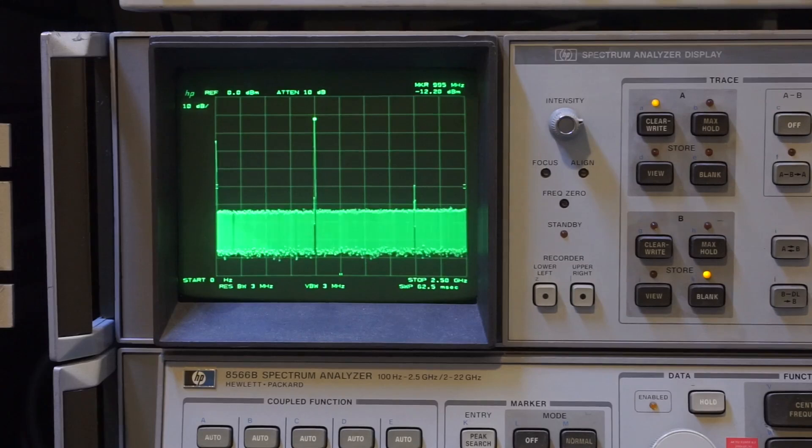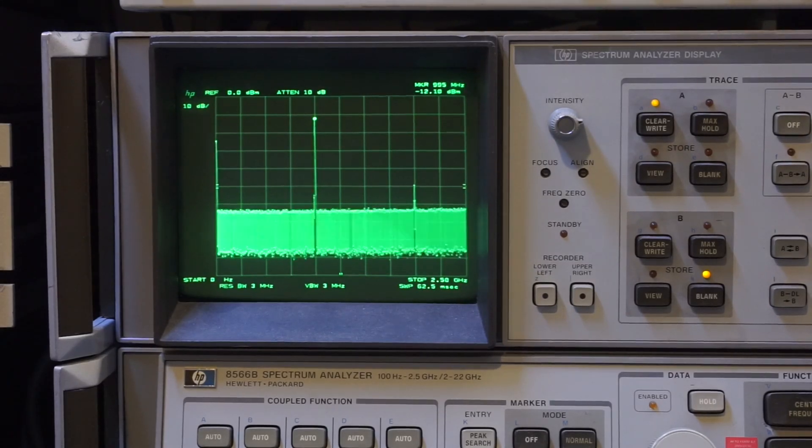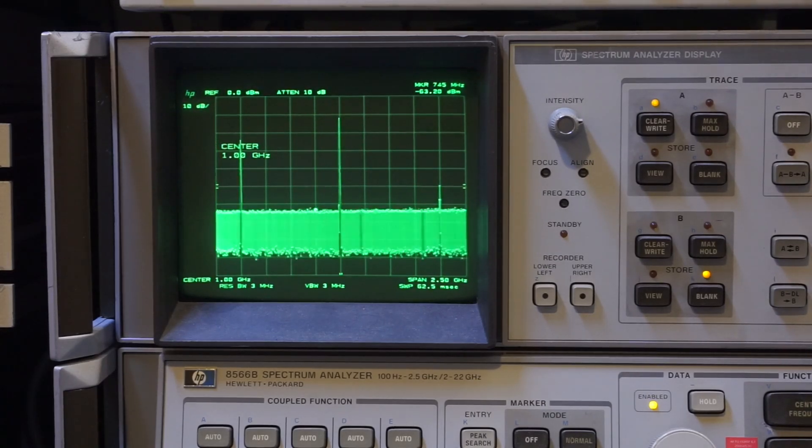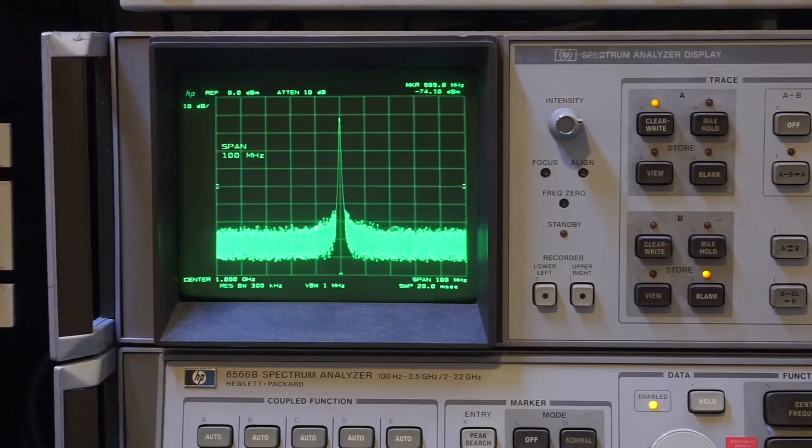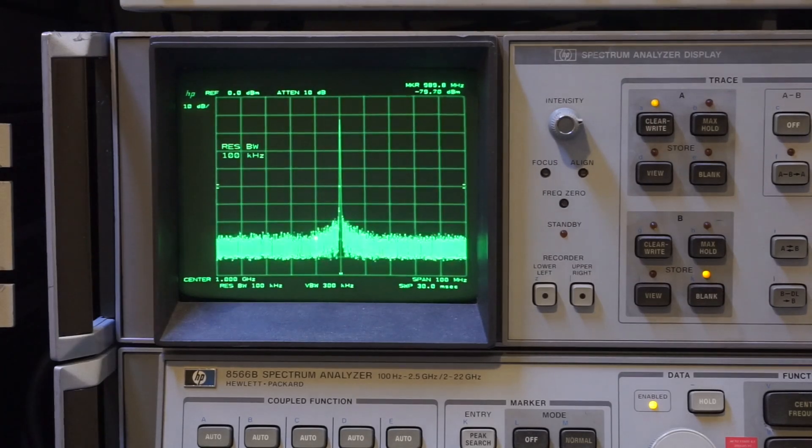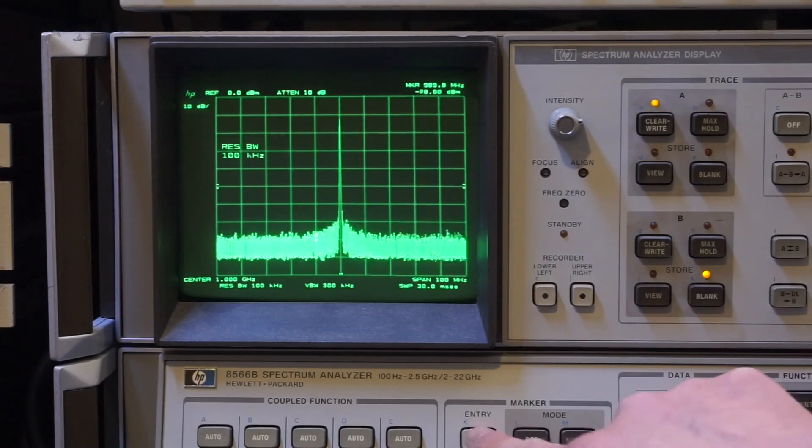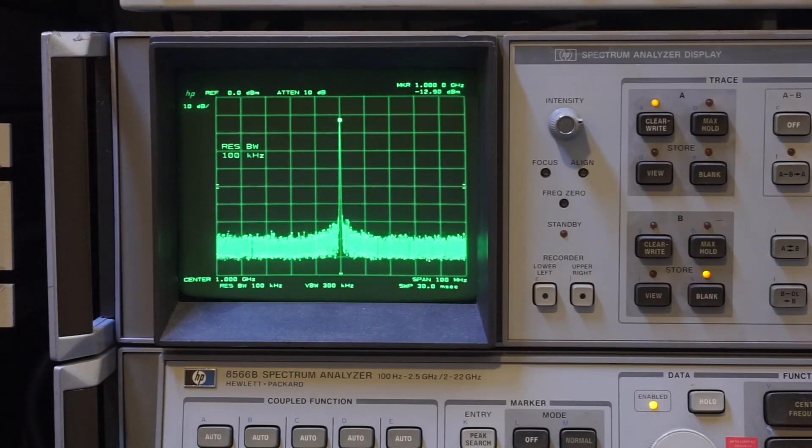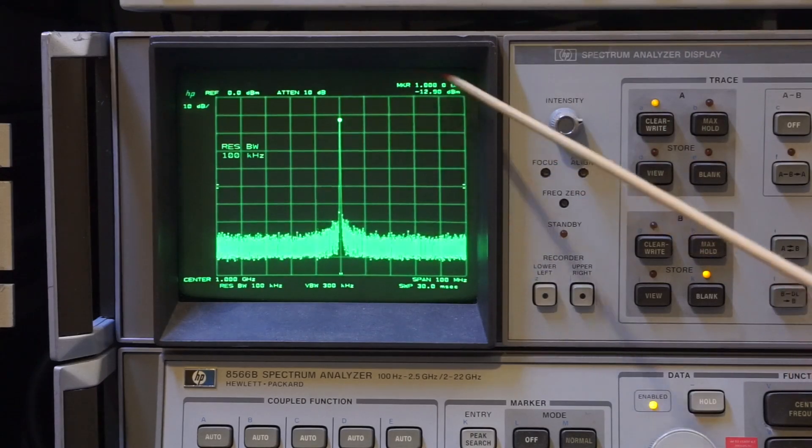To measure the frequency more accurately, we have to zoom in on the signal. Let's change the center frequency to 1 GHz and the frequency span to 100 MHz. Now let's change the resolution bandwidth to 100 kHz. So now we have a very narrow frequency, and let's find the peak again.